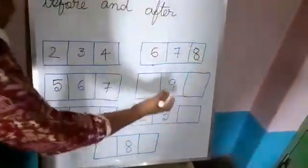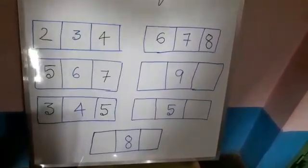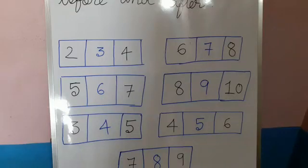You do the rest of it on your own. We will check the answer after some time. Now, 9. Before 9 we get 8 and after 9 we get 10. Similarly, before 5 we get 4. After 5 we get 6. Before 8 we get 7 and after 8 we get 9.